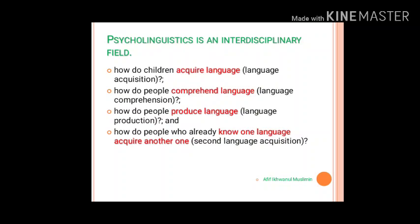There are four areas discussed in psycholinguistics: first, how children acquire language; second, how people comprehend language; third, how people produce language; and fourth, how someone who already knows one language can acquire a next language. This last area considers not only the learner's point of view but also the teacher's perspective on how to teach a second or foreign language to students.